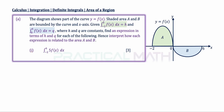In part 1, integrate 5·f(x) dx from -2 to 6. In part 2, integrate f(x) from 6 to 0 minus the integral of f(x) from 0 to -2 dx. Both are three-mark questions. You are also asked to interpret how each expression is related to the areas A and B.